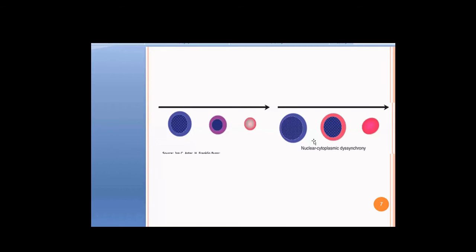This situation is called nucleocytoplasmic asynchrony, because the cytoplasm is maturing but the nucleus is not. That is the most characteristic finding in the pathogenesis of megaloblastic anemia and B12 deficiency. This abnormal nucleated erythroblast showing nucleocytoplasmic asynchrony is called a megaloblast — an abnormal erythroblast where the cytoplasm has matured but the nucleus has not.